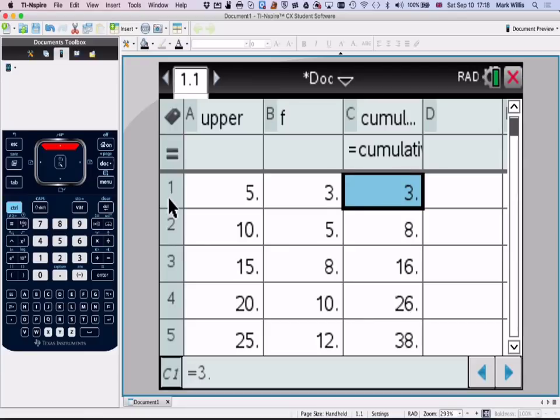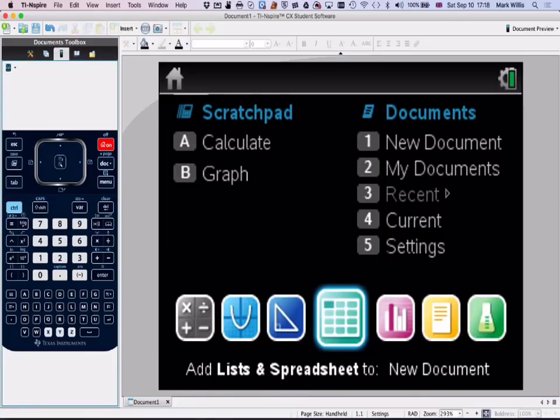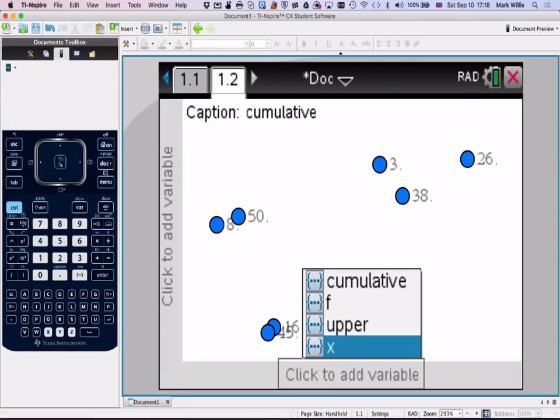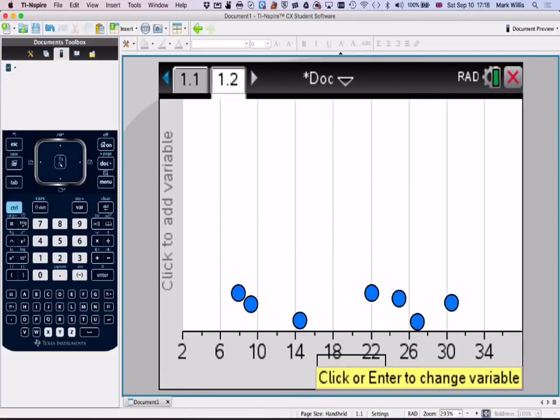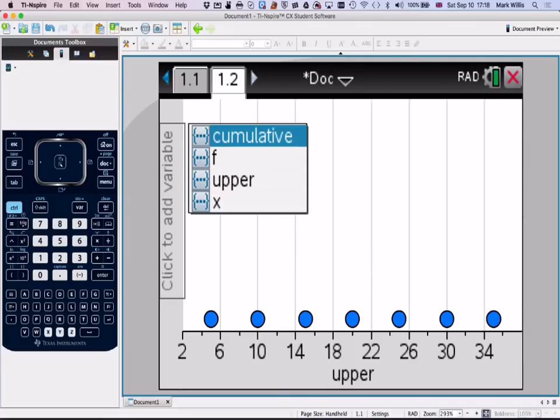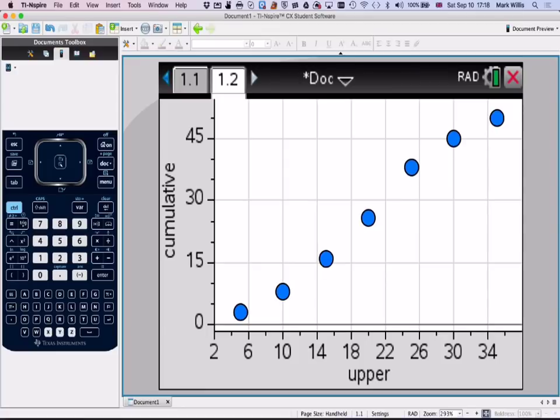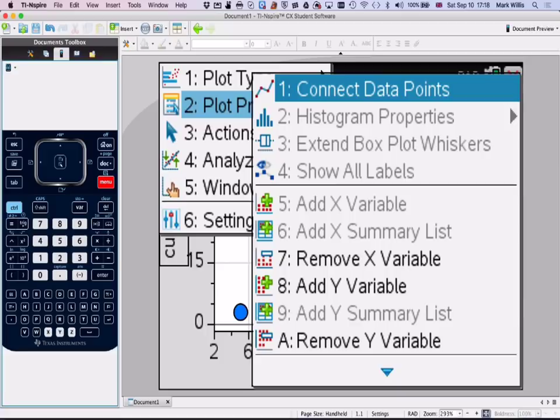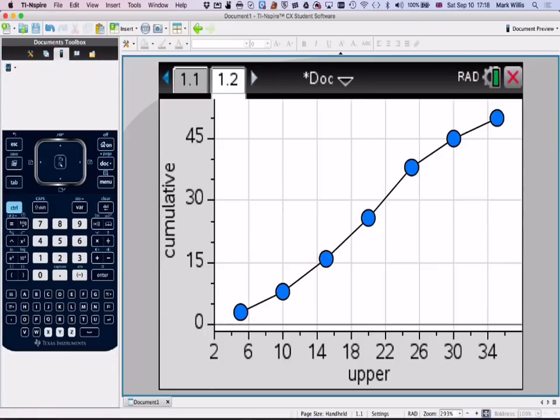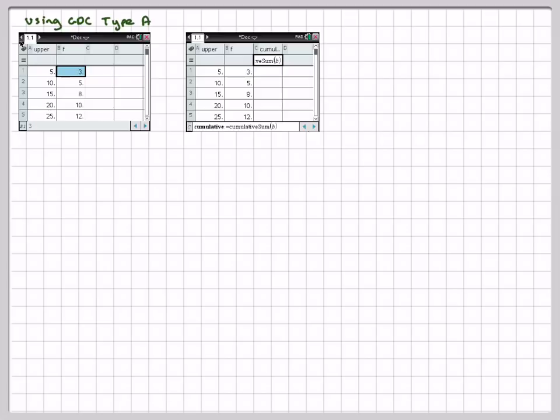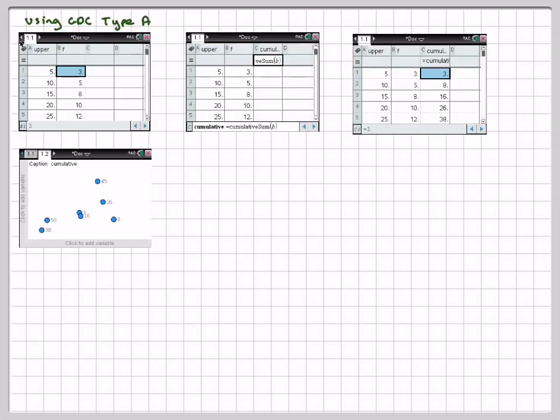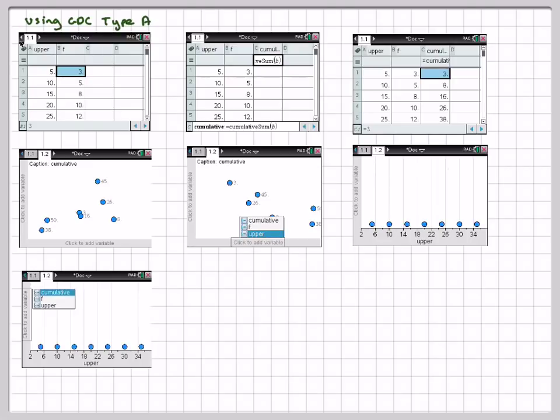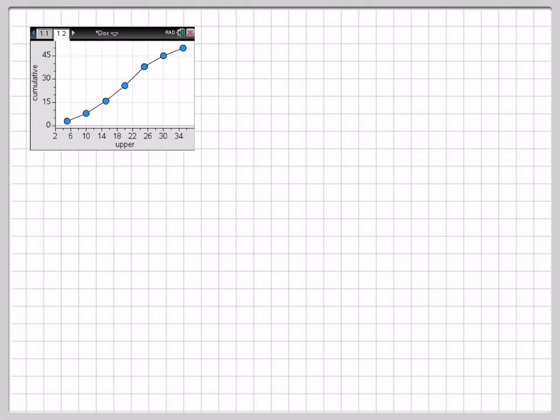Now to do the graph, if we go to home screen and then select graphing and then click here and we'll put in upper here. And then click here and we'll put in cumulative. And you can see we've got the points. And then if we go to menu and then properties and connect the points, we get the cumulative frequency curve. So going here, these are the screenshots of all that. That's quite a lot at the bottom on the Firefly page.